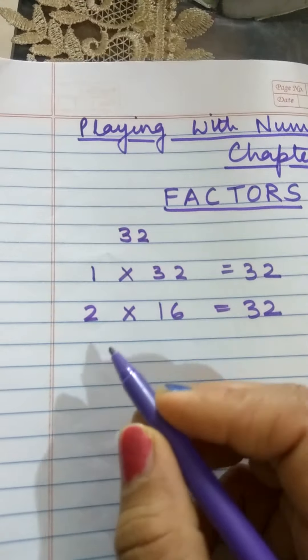Then I try 5. But this number doesn't end with 0 or 5. So 5 is also not a factor. Then we take 6. Now we have 6 times 5 is 30 and 6 times 6 is 36. So 32 doesn't fall in the table of 6. So we cannot take 6.